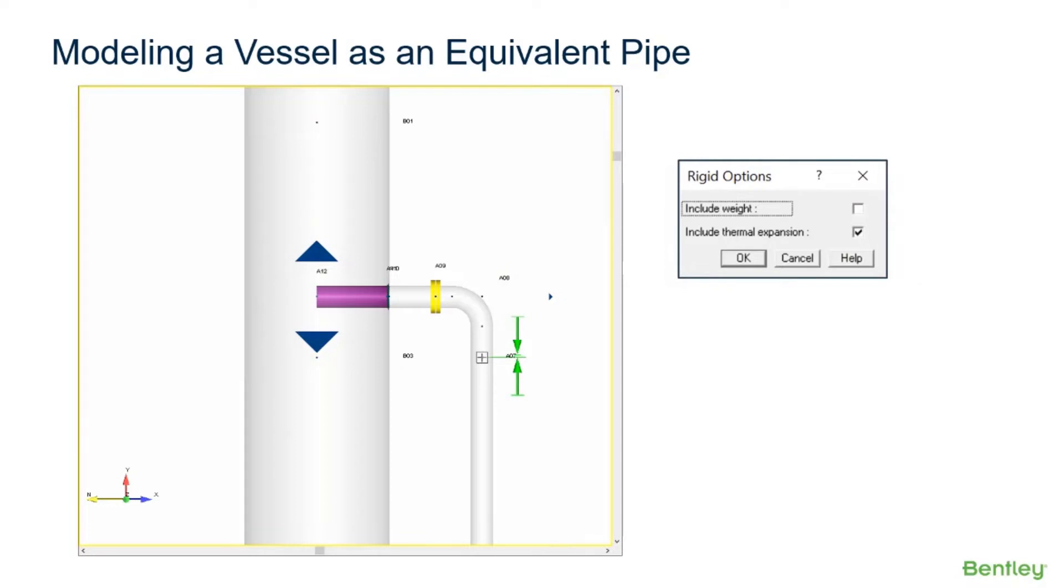After the nozzle flexibility element is modeled, a rigid pipe element should be used to connect the piping to the centerline of the vessel, shown here in purple. This is made rigid to represent the direct connection from the nozzle to the vessel.